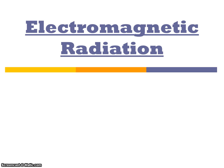Now we're going to talk about electromagnetic radiation, or the electromagnetic spectrum, or what we commonly refer to as light waves, gamma rays, radio waves — different kinds of waves. These are all transverse waves. Electromagnetic radiation is a combination of an electronic wave and a magnetic wave at the same time. That's why it's called electromagnetic radiation.